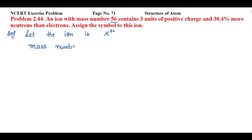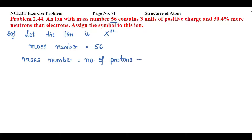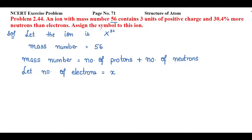The given value is mass number equal to 56. We have to make the relation according to mass number to find the number of electrons and protons: mass number equals number of protons plus number of neutrons. Since the ion carries three positive charge, the number of protons are three more than electrons. So I'll assume number of electrons equal to x, which means number of protons equal to x plus 3.